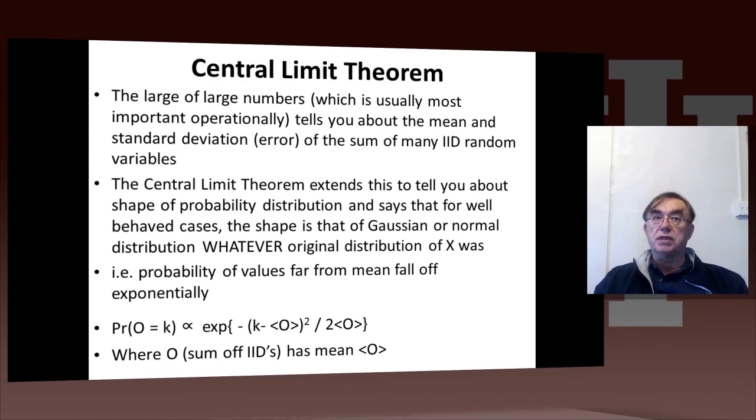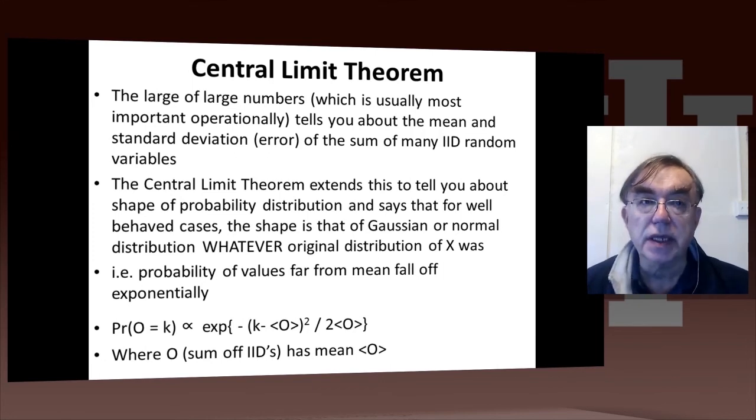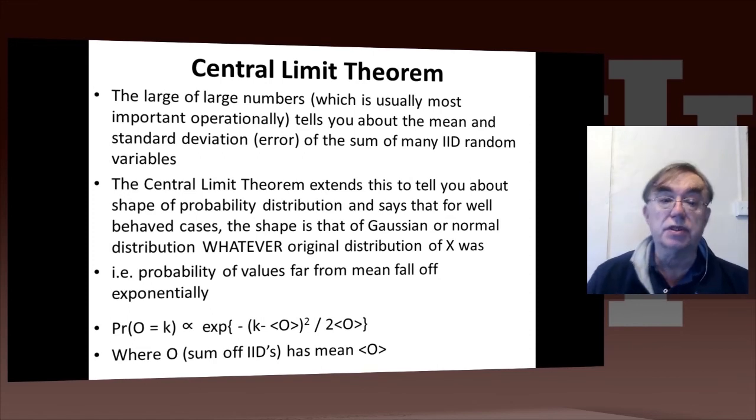We can think of the counts as a sum over many random variables. And then the Central Limit Theorem says those random variables, when you sum over enough of them, are always distributed with this Gaussian or normal distribution.